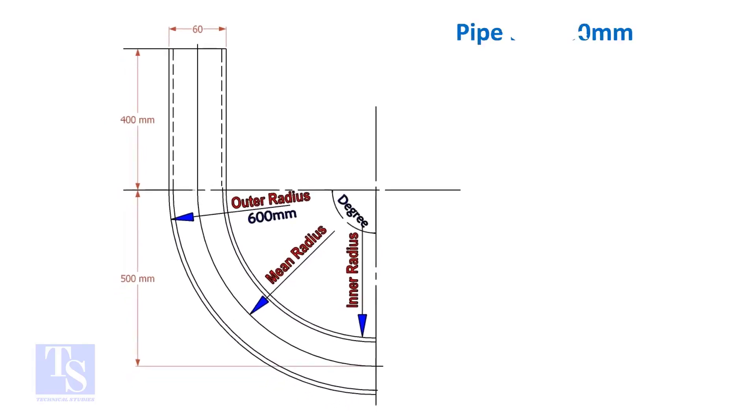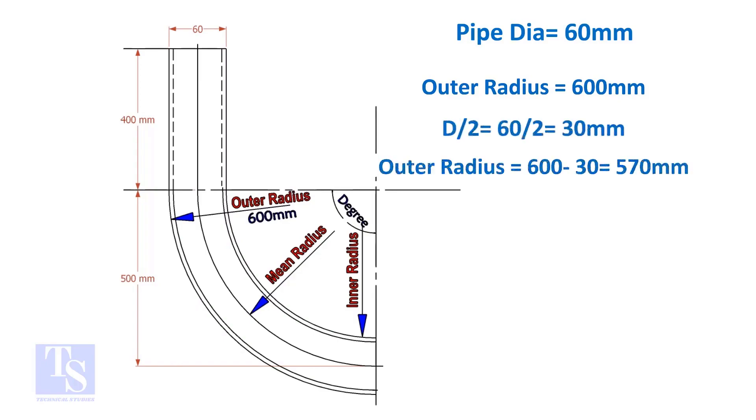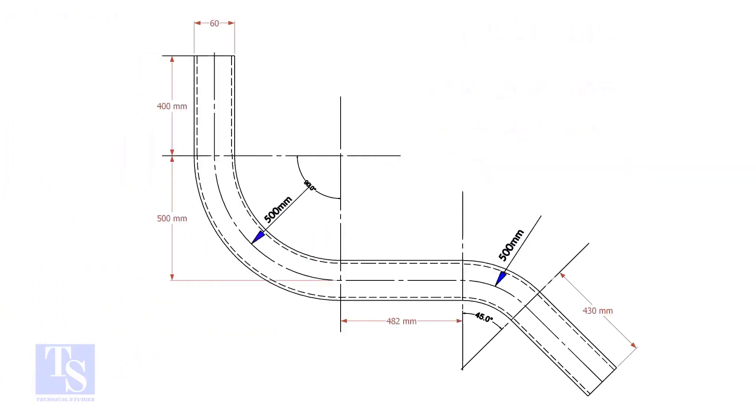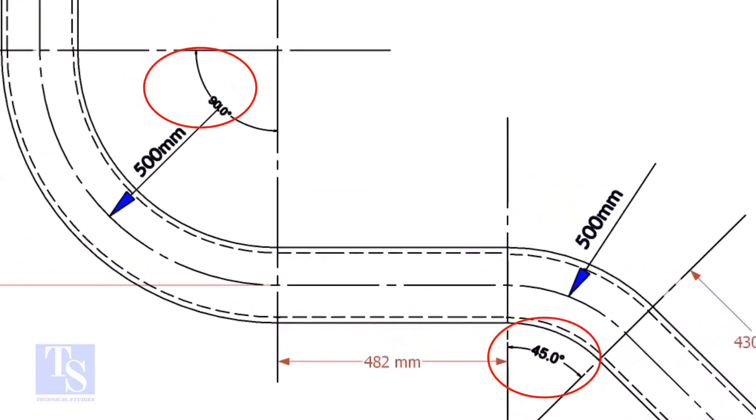Assume the diameter of the bend is 60 mm and the outer radius is 600 mm, then the mean radius is 600 minus half the diameter of the pipe, equal to 570 mm. In our drawing there are two bends, one is 90 degree and the other one is 45 degree.